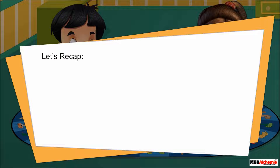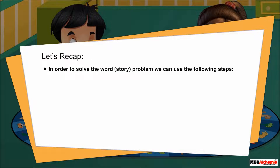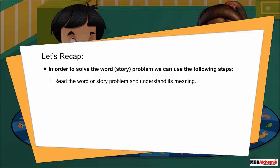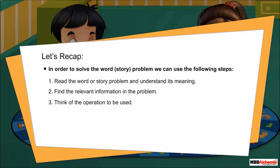Let's recap. In order to solve a word or story problem, we can use the following steps: one, read the word or story problem and understand its meaning; two, find the relevant information in the problem; three, think of the operation to be used; four, solve the problem using the decided operation.